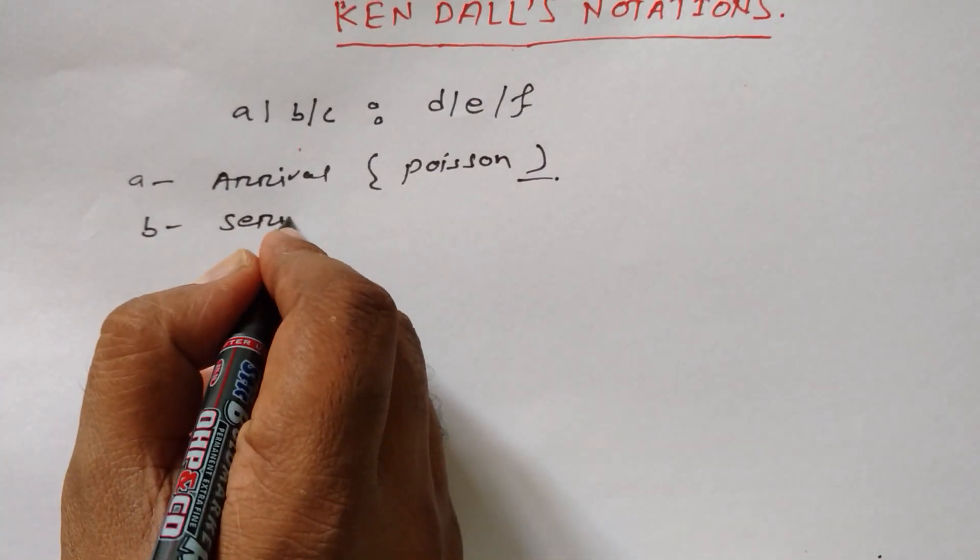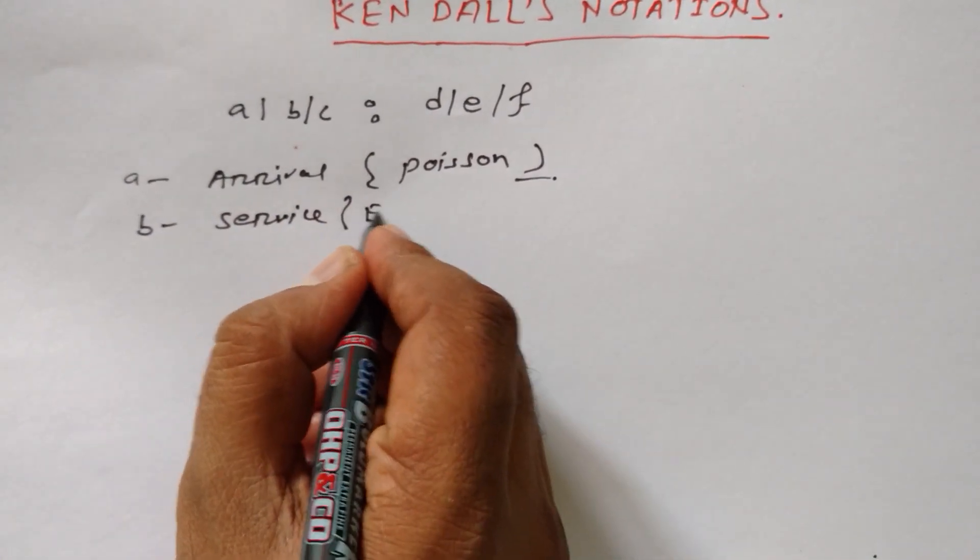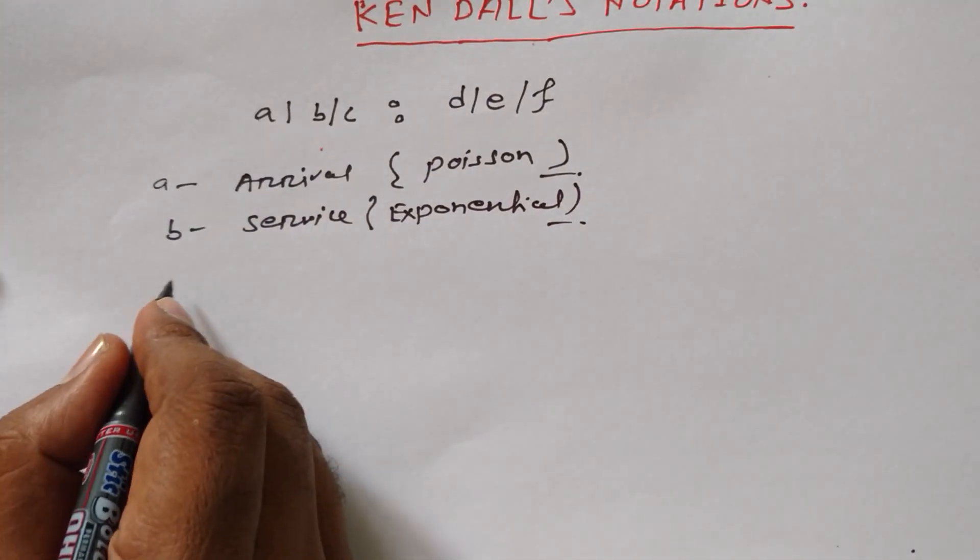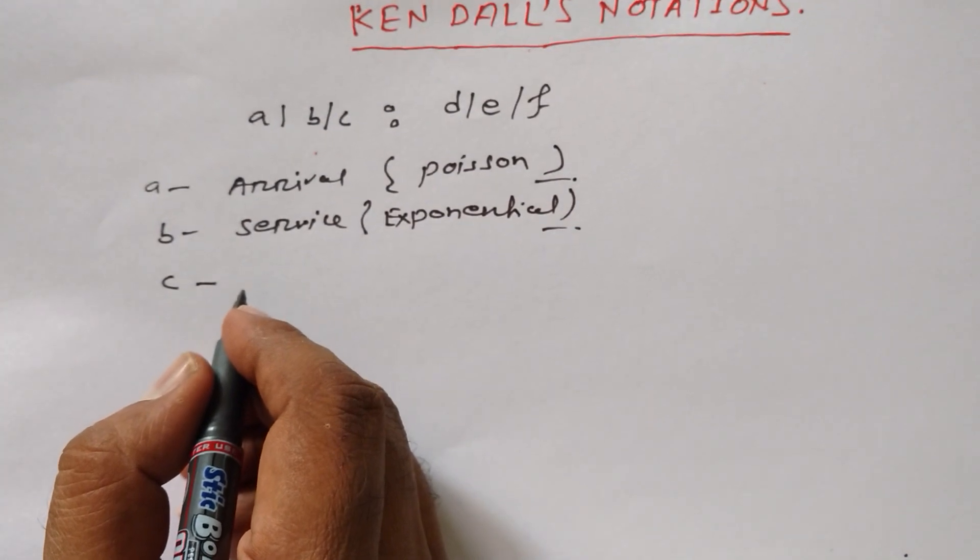B is service, and in service exponential distribution is followed.